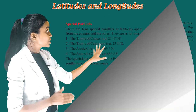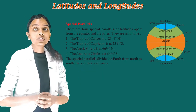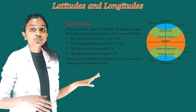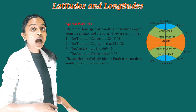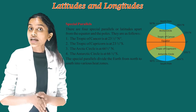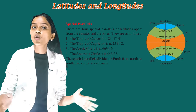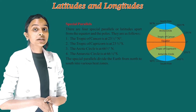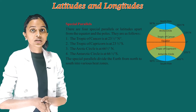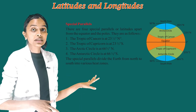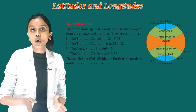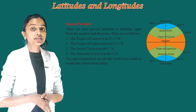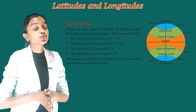Now see the special parallels. There are four special parallels of latitude apart from the equator and the poles. The Tropic of Cancer is at 23 and a half degrees north. The Tropic of Capricorn is at 23 and a half degrees south. The Arctic Circle is at 66 and a half degrees north. The Antarctic Circle is at 66 and a half degrees south. The special parallels divide the earth from north to south into various heat zones.